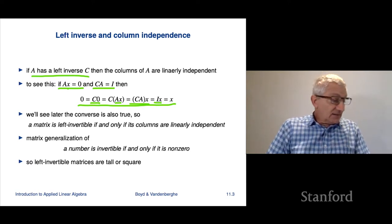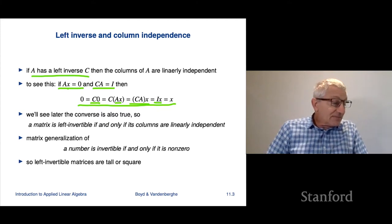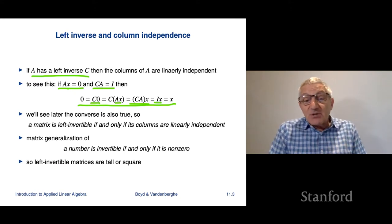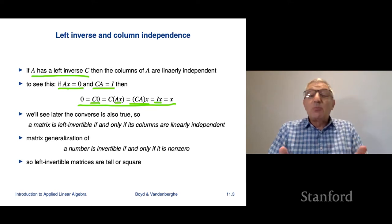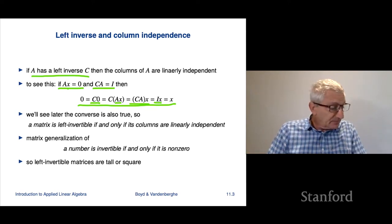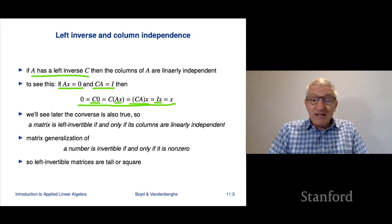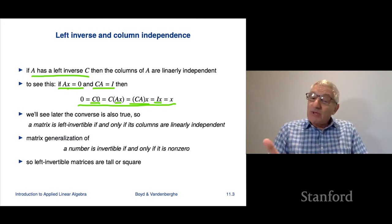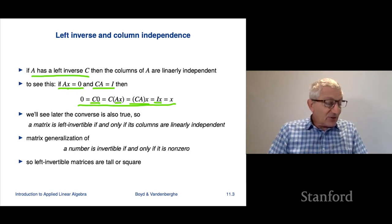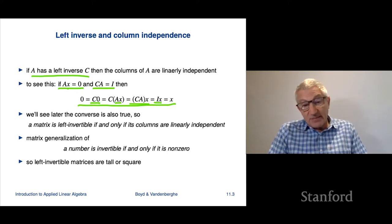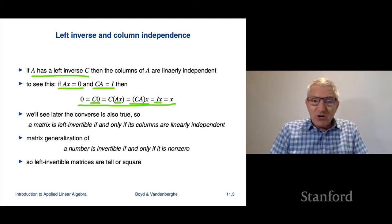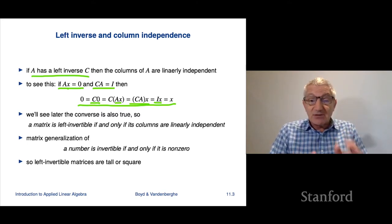Later in the class we'll see that a matrix is left invertible if and only if its columns are linearly independent — if its columns are linearly independent, it has a left inverse and we'll be able to construct one. This is the matrix generalization of: a number is invertible if and only if it is non-zero. So a matrix is left invertible if and only if its columns are linearly independent. Linear independence is serving as the analog of being non-zero.